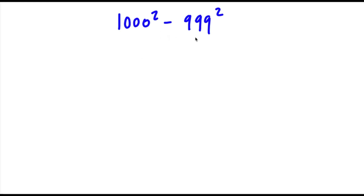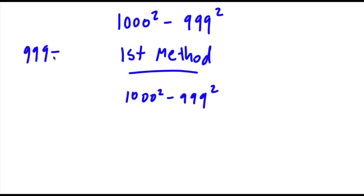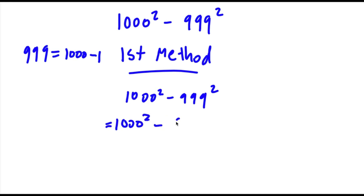Alright, so we have 1000 squared minus 999 squared. I actually have two methods to solving this problem. So the first method: we start with 1000 squared minus 999 squared, and 999 is the same thing as 1000 minus 1. So now I'm going to replace 999 with 1000 minus 1. So now I have 1000 squared minus (1000 minus 1) squared.